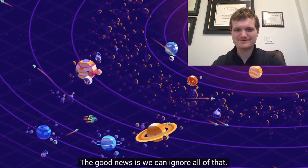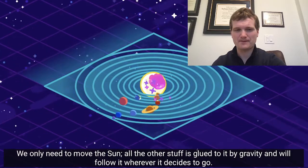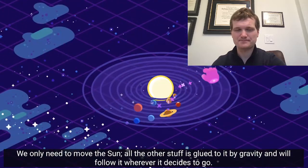But how do we possibly move the hundreds of thousands of objects in the solar system? The good news is, we can ignore all of that. We only need to move the sun, all the other stuff is glued to it by gravity and will follow it wherever it decides to go.